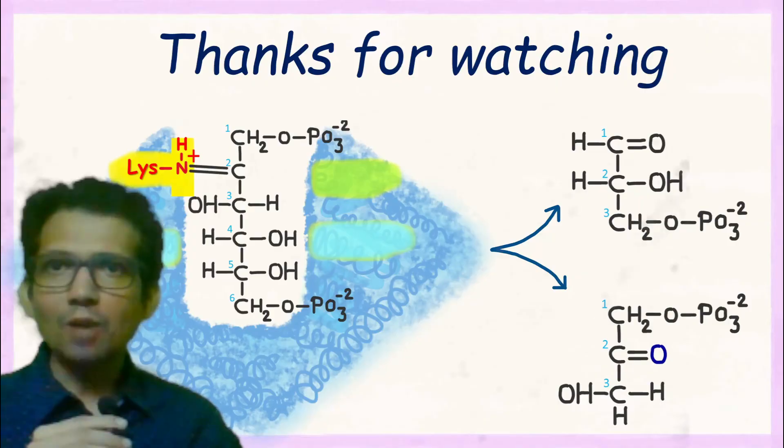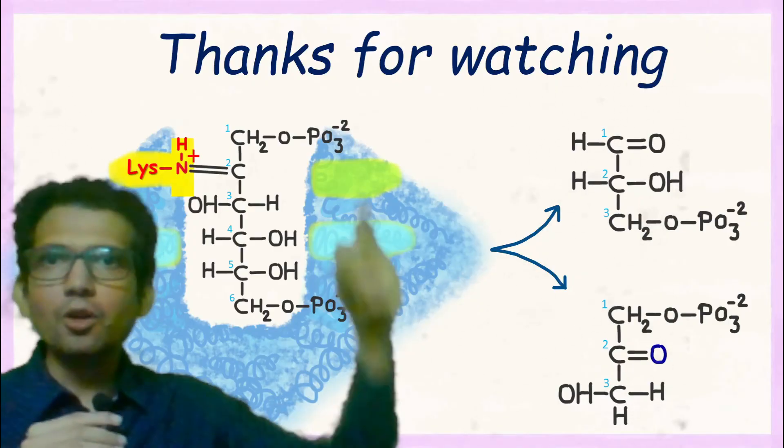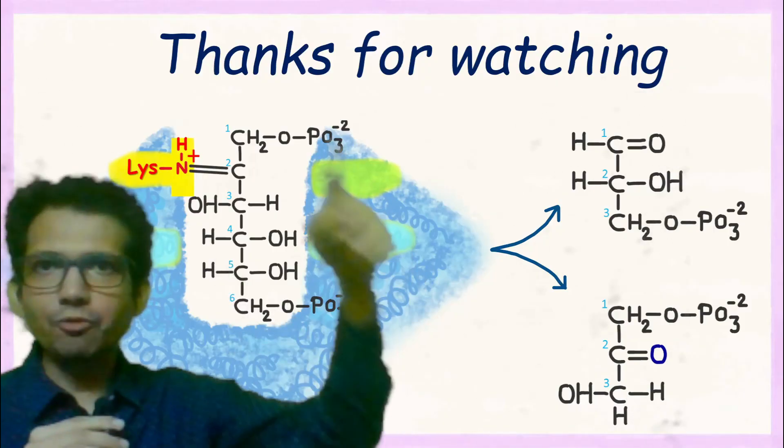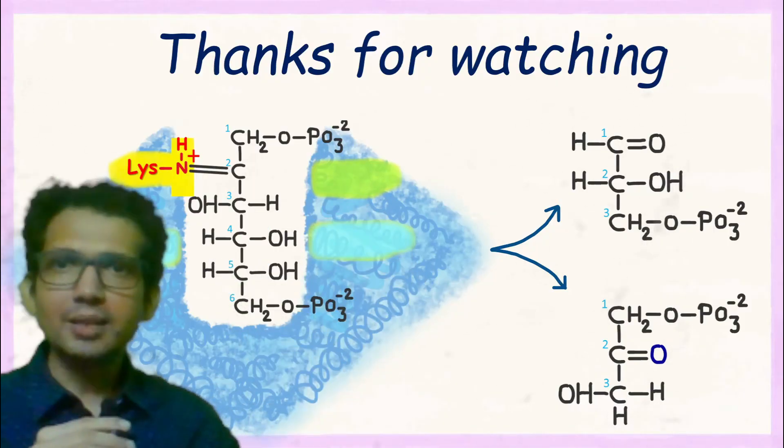So this is how the enzyme aldolase functions. It breaks fructose 1,6-bisphosphate into dihydroxyacetone phosphate and glyceraldehyde 3-phosphate.